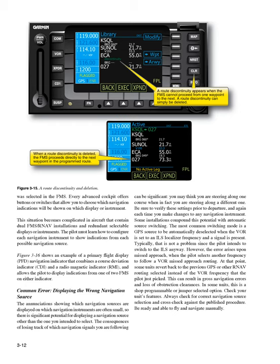The consequences of losing track of which navigation signals you're following can be significant. You may think you're steering along one course when in fact you are steering along a different one. Be sure to verify these settings prior to departure, and again each time you make changes to any navigation instrument. Some installations compound this potential with automatic source switching. The most common switching mode is for a GPS source to be automatically deselected when the VOR is set to an ILS localizer frequency and a signal is present. Typically, that is not a problem since the pilot intends to switch to the ILS anyway.